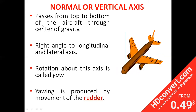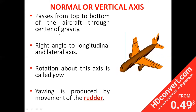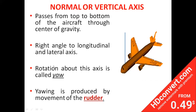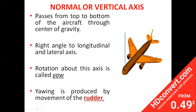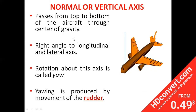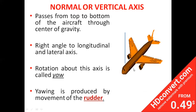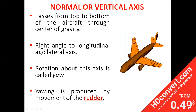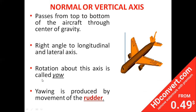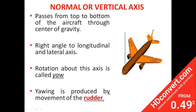The normal or vertical axis passes from top to bottom of the aircraft through the center of gravity, at right angles to the longitudinal and lateral axes. Rotation about this axis is called yaw. Yawing is produced by the movement of the rudder.